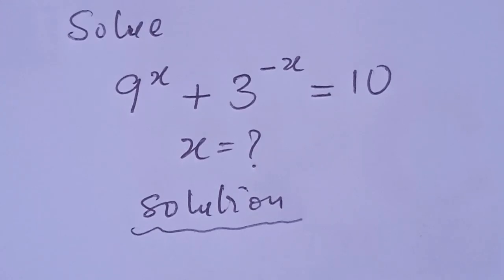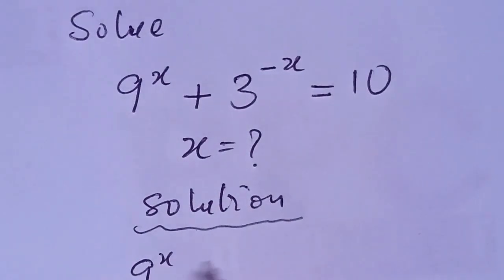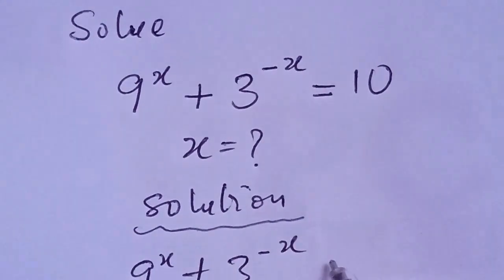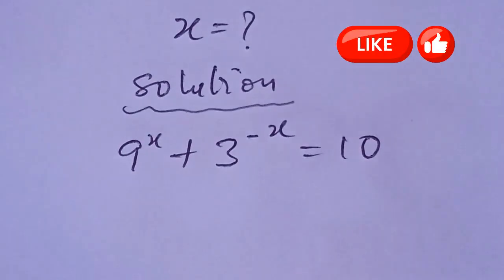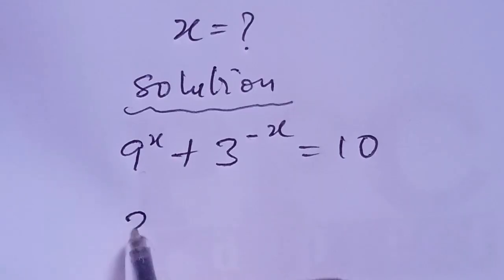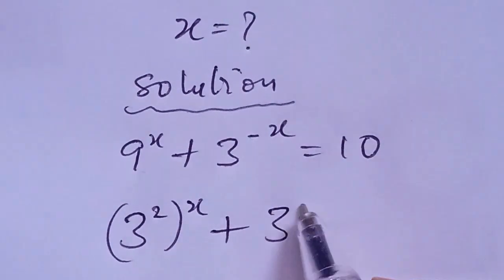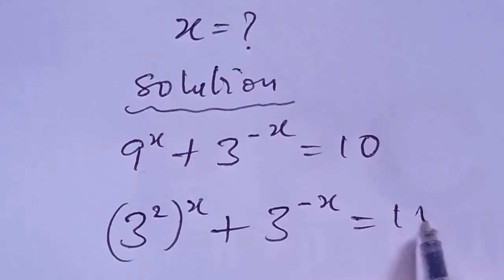We will find all the values of x that satisfy this equation. So we express everything in base 3. We have 9 to the power of x plus 3 to the power of minus x equal to 10. We simplify this and we have 3 to the power of 2, in brackets, to the power of x, plus 3 to the power of minus x, equal to 10.